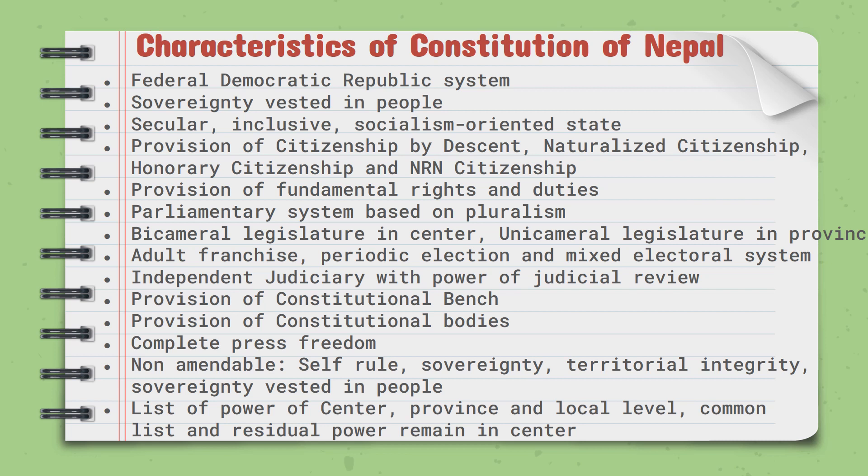Self-rule, sovereignty, territorial integrity, and sovereignty vested in people — these four things cannot be amended while amending the constitution. In Schedules 5 to 9, there is the list of powers of the centre, province, and local level. There are also two common lists, and residual power remains with the centre. These are the characteristics of our constitution.